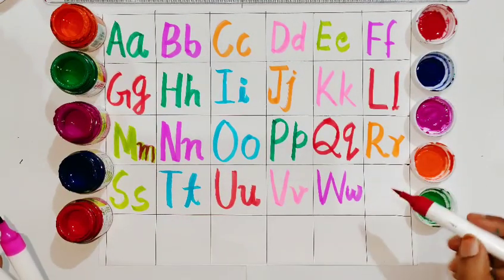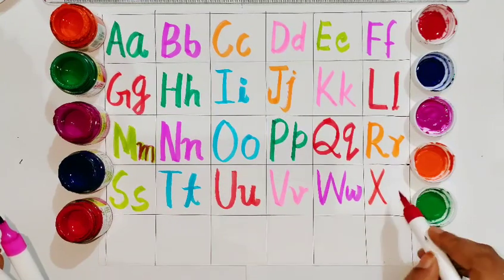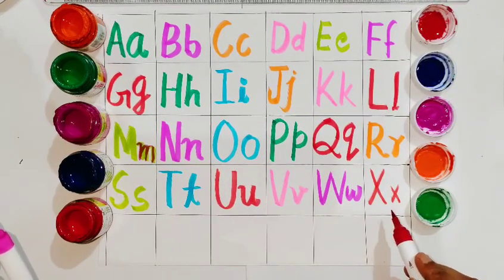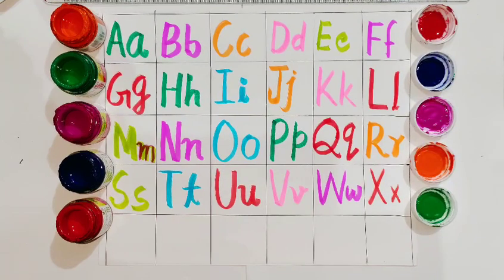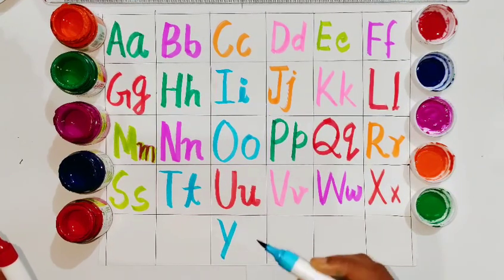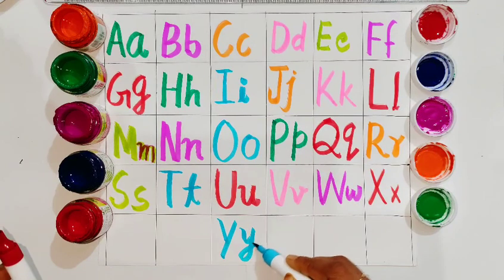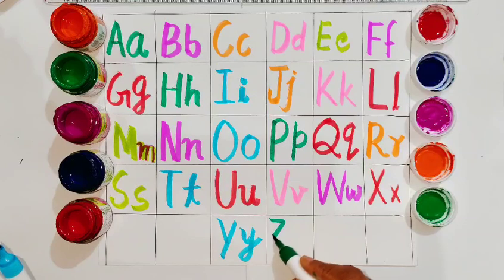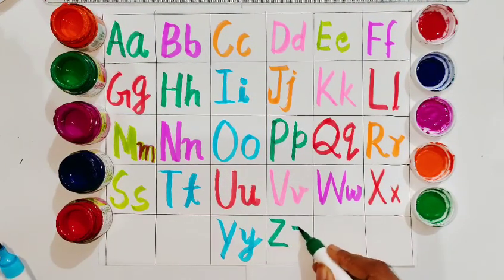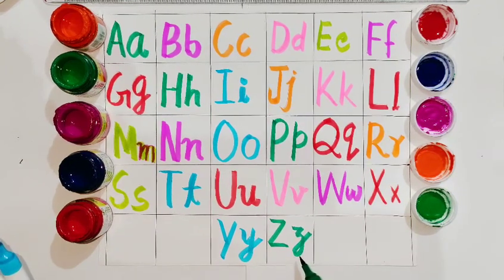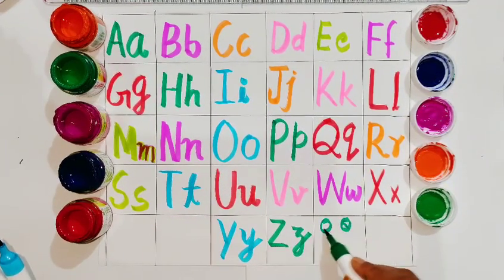Red color, capital X. Red color, small x. Capital X, small x. Sky blue color, capital Y. Sky blue color, small y. Capital Y and small y. Green color, capital Z. Green color, small z. Capital Z, small z. Smile.